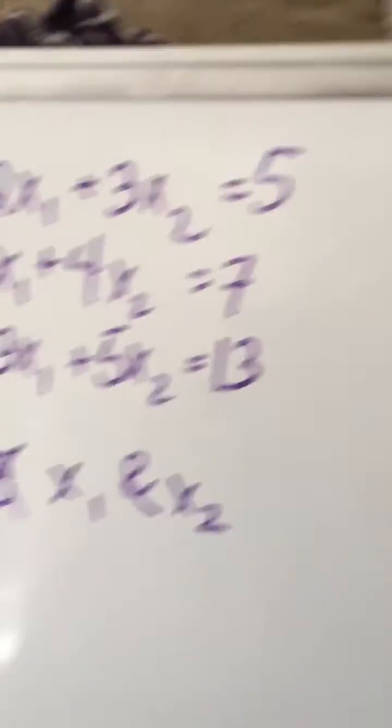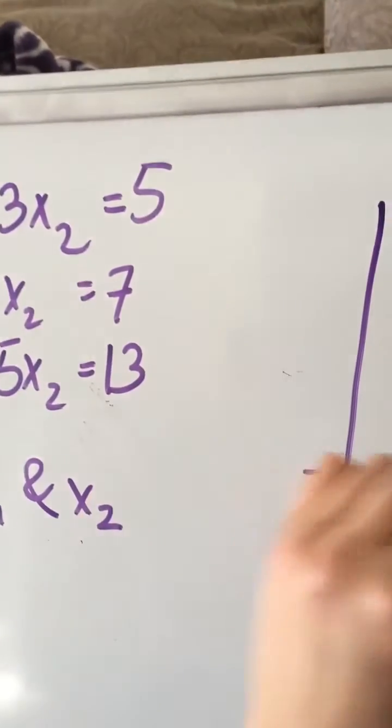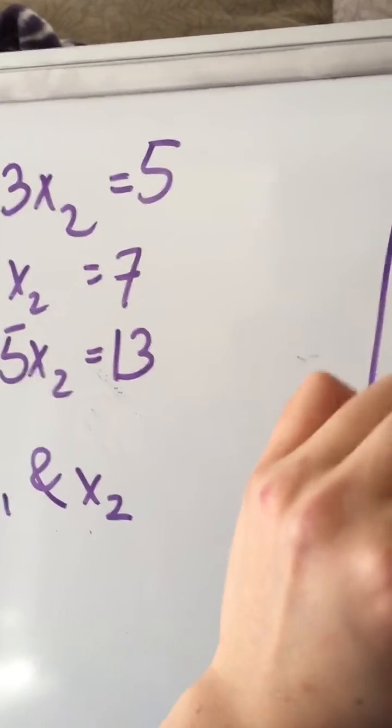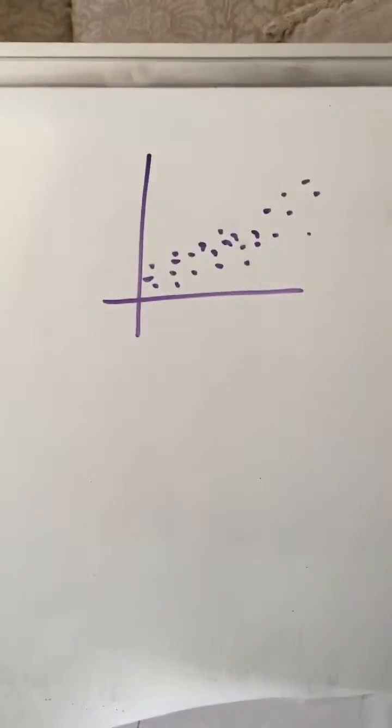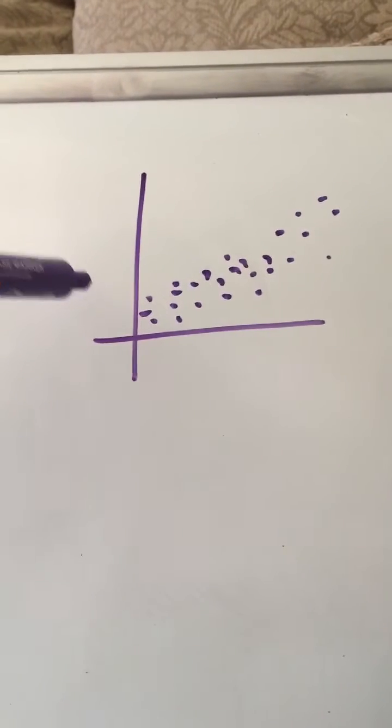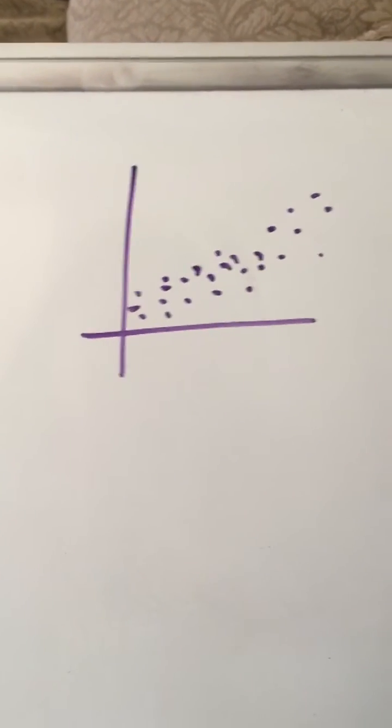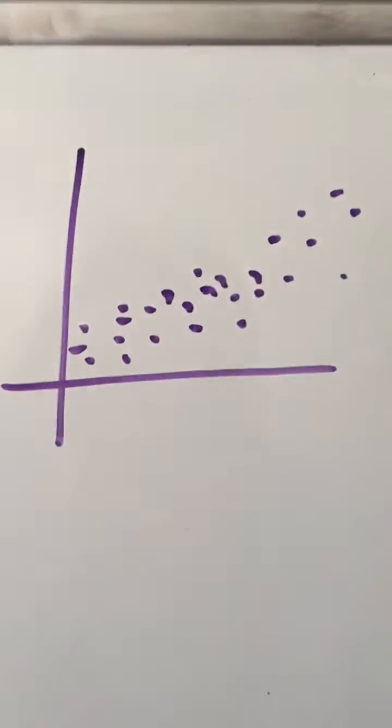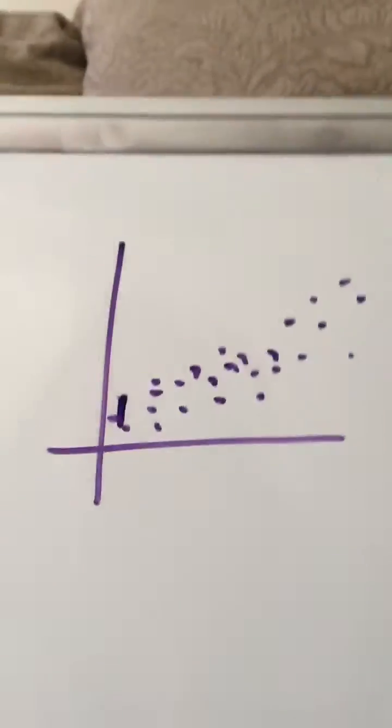So what would this look like graphically? We would have, so graphically our system of equations is represented like this where we know we cannot use interpolation to find a function that fits all the points because it does not pass the vertical line test, if you remember that from middle school.